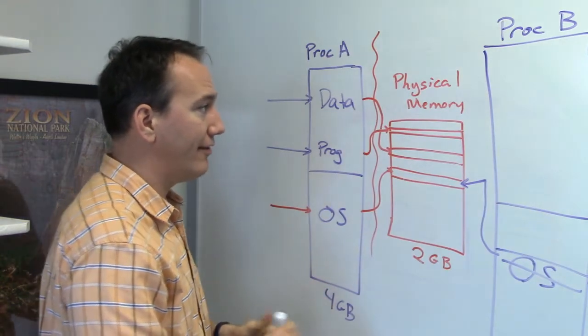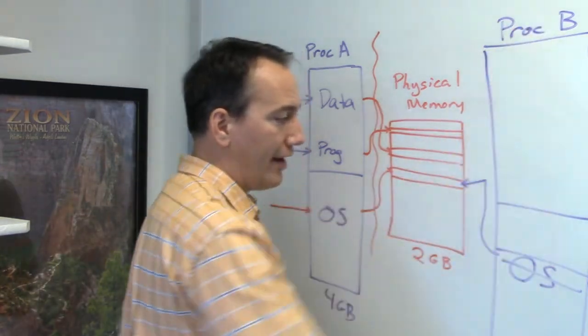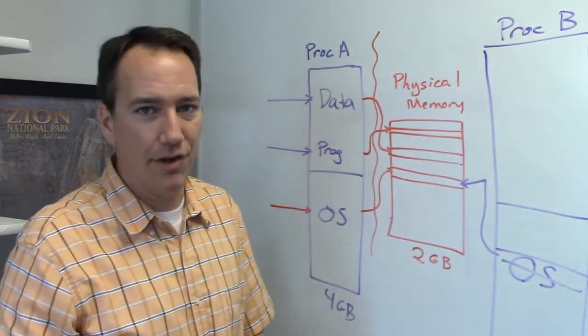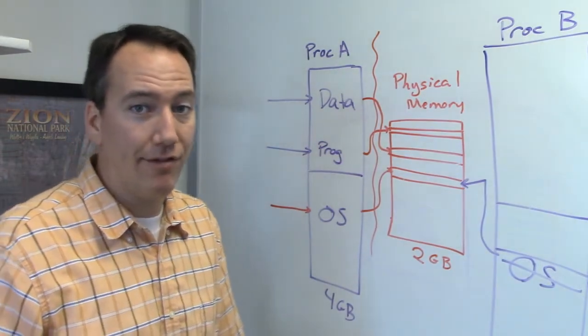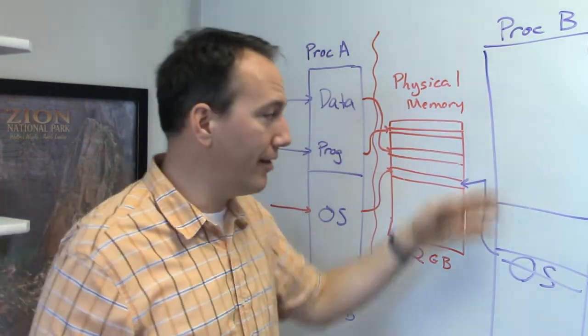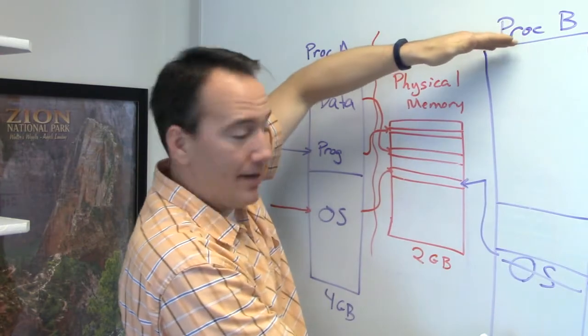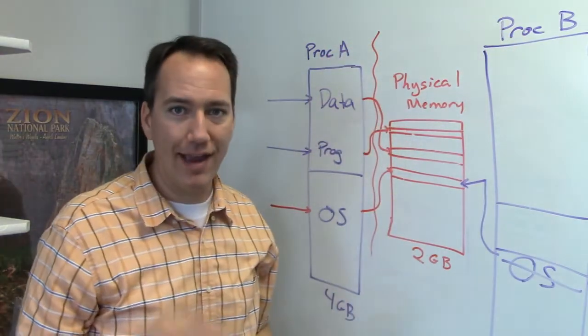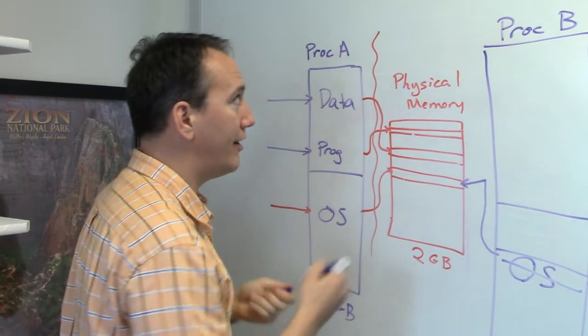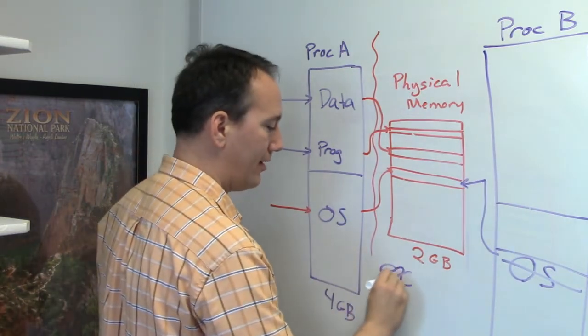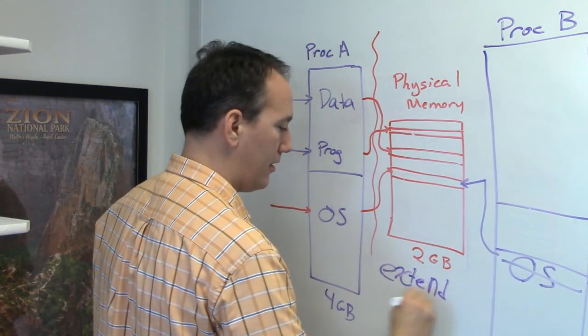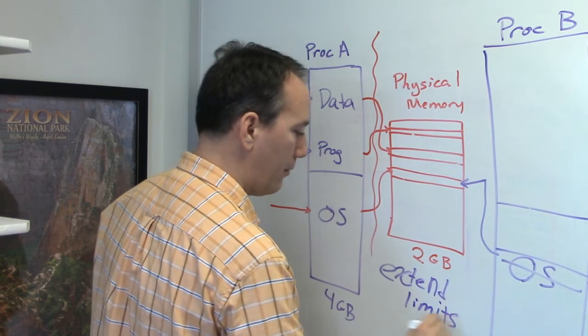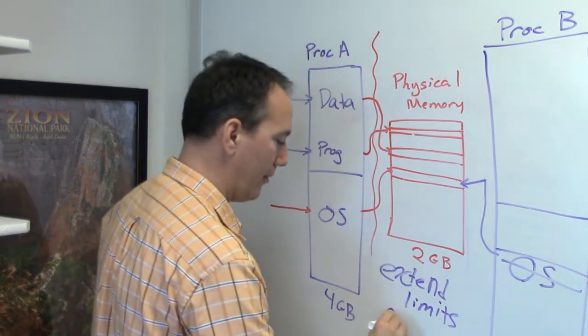The other thing that's nice is all of this memory I'm not using in the process, so most processes only use a few megabytes or even a few hundred megabytes of memory. All of this wasted space that I'm not using doesn't have to be allocated on physical memory. So there is a way not only to extend the limits of memory, but also a way to reuse memory and to save space.